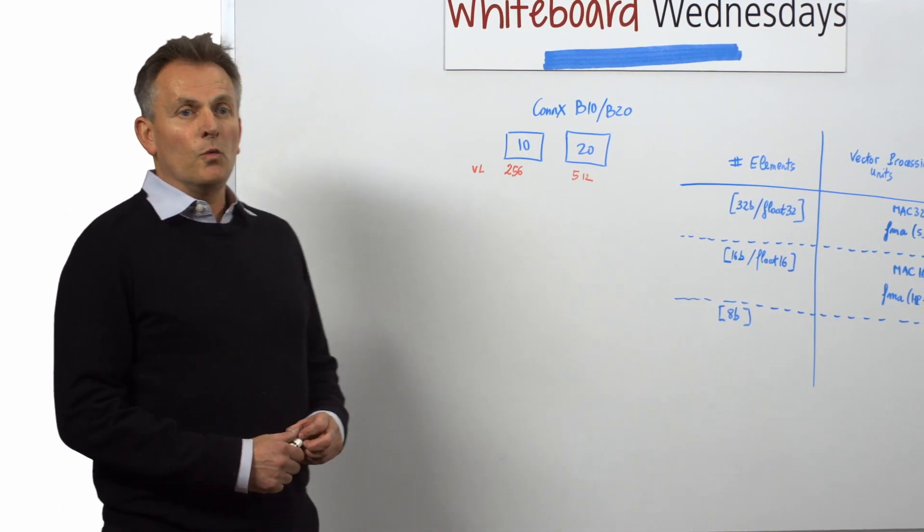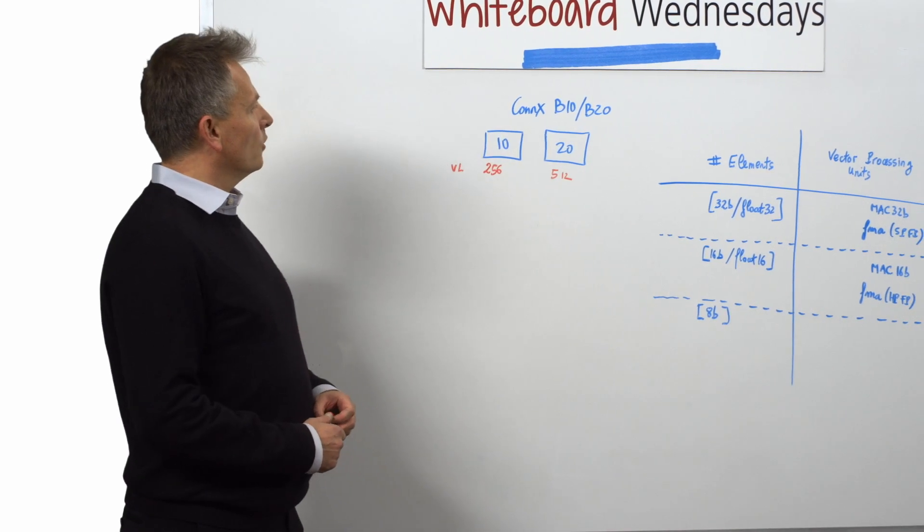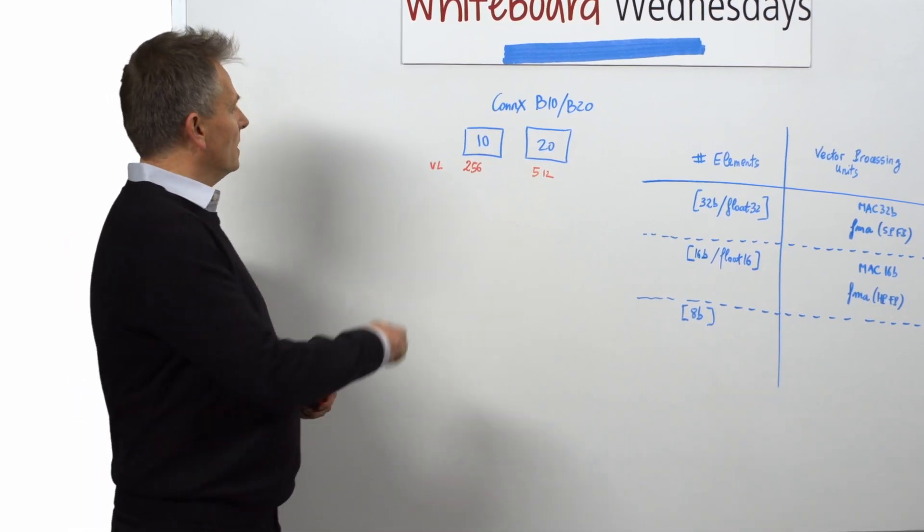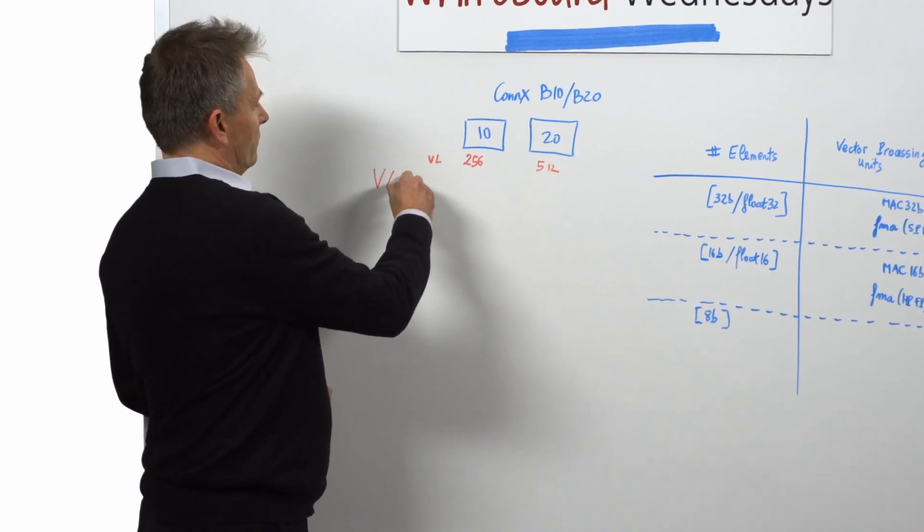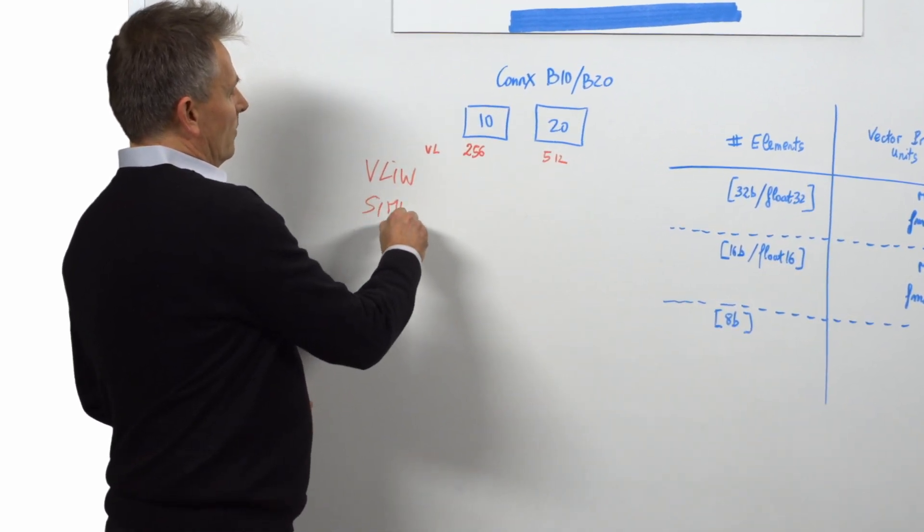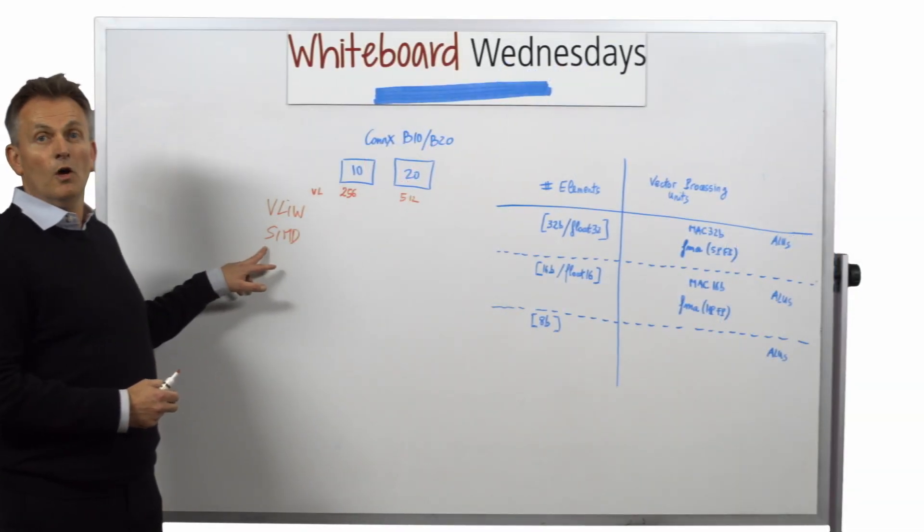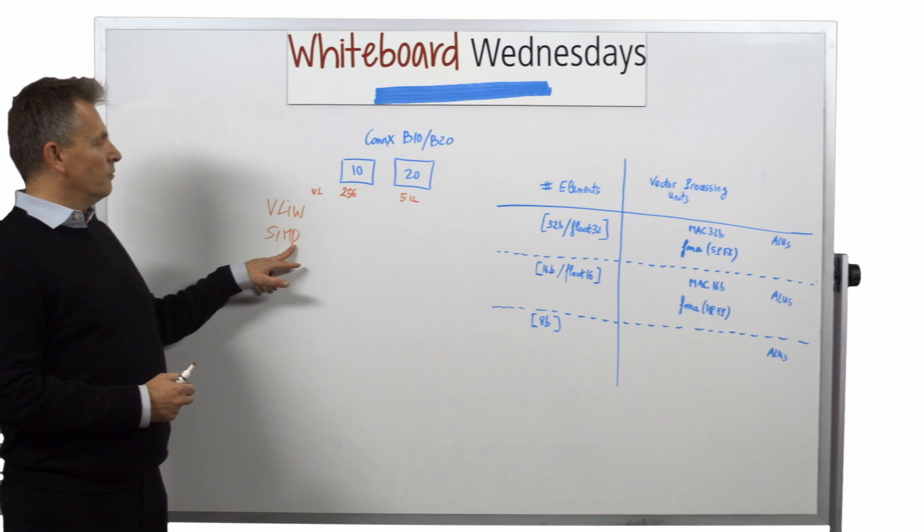In the previous Whiteboard Wednesday, we talked about the B10, B20 and the capability, the architecture which is VLIW and SIMD, meaning that a single instruction is capable of processing on multiple data.